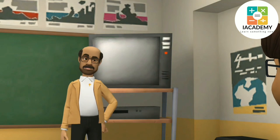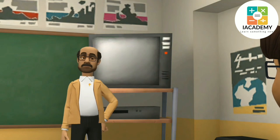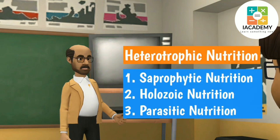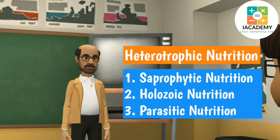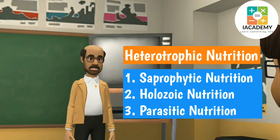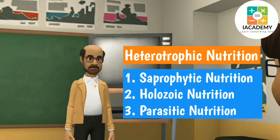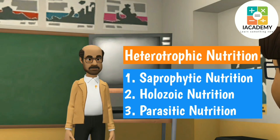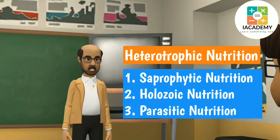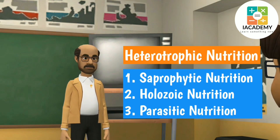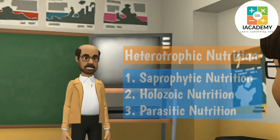Heterotrophic nutrition is divided into three types. Number one: saprophytic nutrition. Number two: holozoic nutrition. Number three: parasitic nutrition.